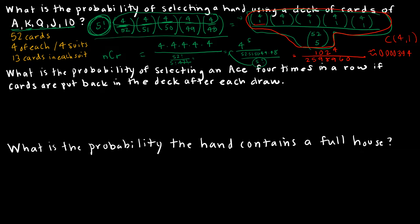Next question: what's the probability of selecting an ace four times in a row if cards are put back in the deck after each draw? This one's pretty easy because if they're put back, I have 52 cards each time and four aces each time. So it's just (4/52)^4, which is the same as (1/13)^4. Using a calculator, that's approximately 0.00035.